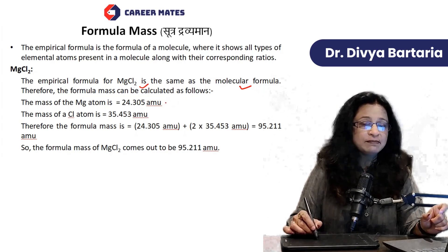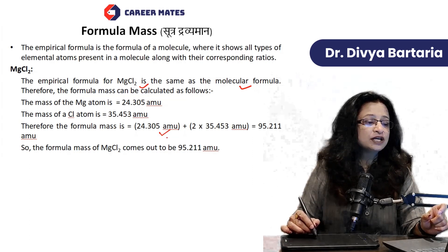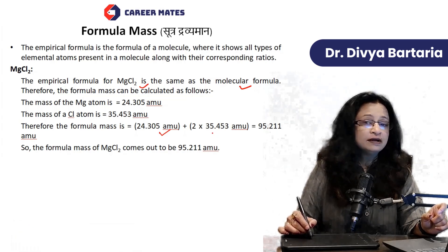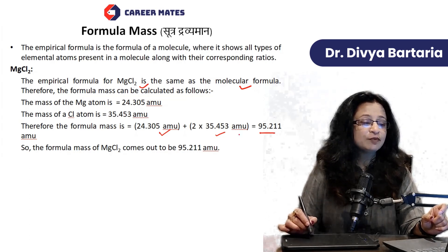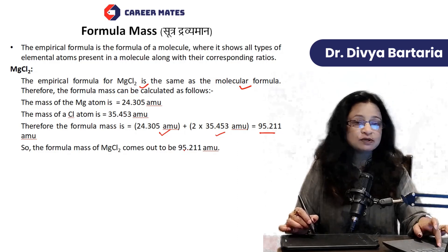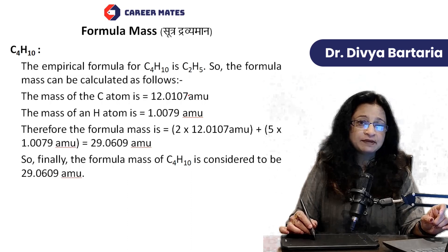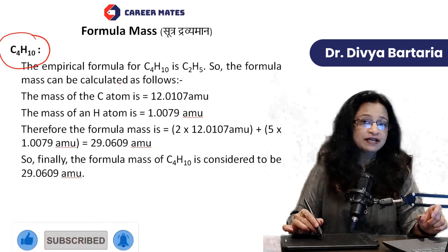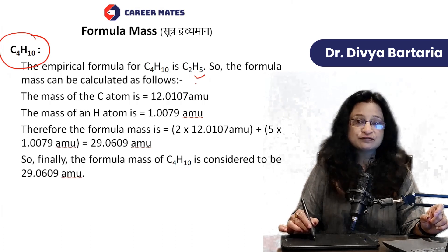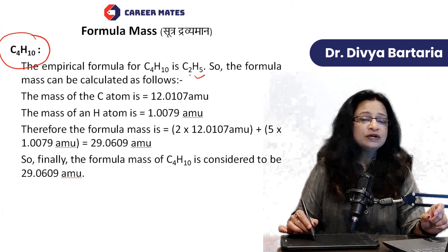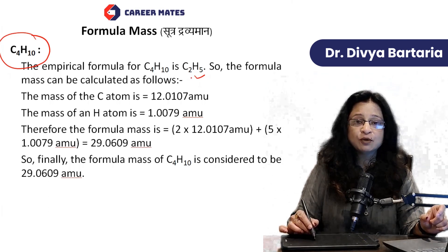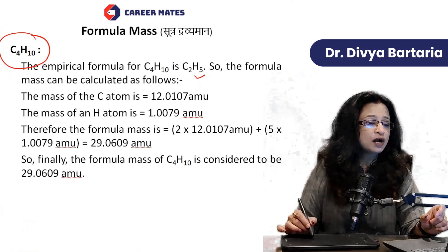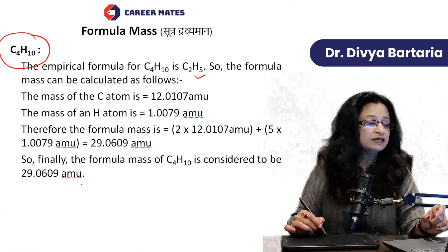In the case of MgCl2, there is one magnesium atom and two chlorine atoms. The mass of magnesium is 24.305 amu, and two times 35.453 amu is the mass of two chlorine atoms, giving us 95.211 amu as the formula mass of magnesium chloride. For C4H10, we can simplify it, and the simplest empirical formula is C2H5. The formula mass is then 2 times carbon plus 5 times hydrogen atoms.